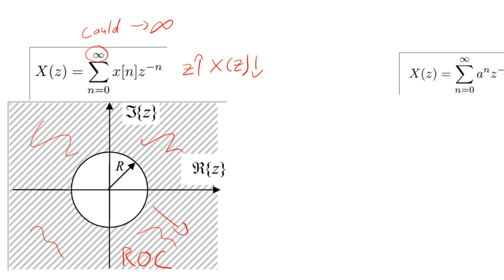For example, let's say we took the Z-Transform of this sequence. Then the transform will converge only if the absolute value of Z was greater than 2. This would happen because the denominator would grow faster than the numerator.